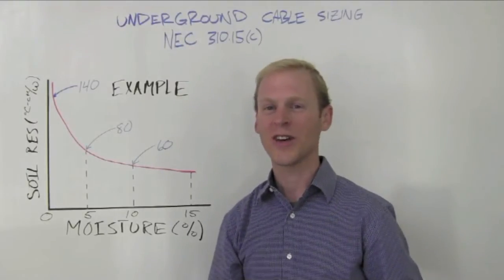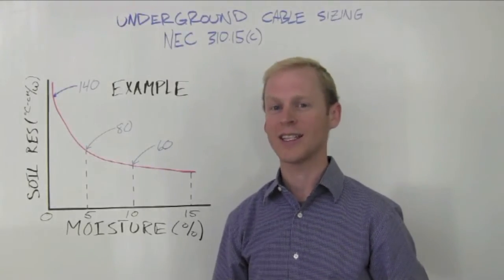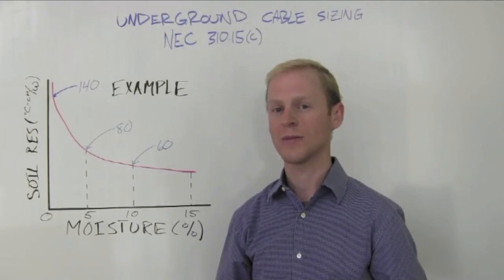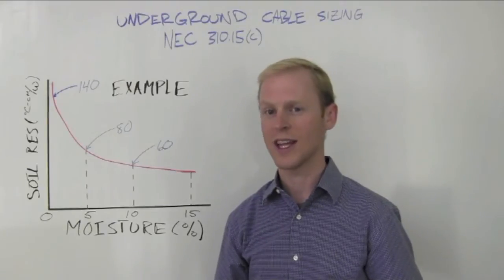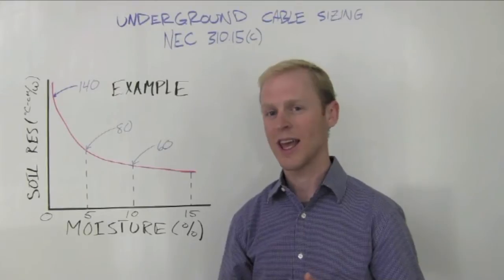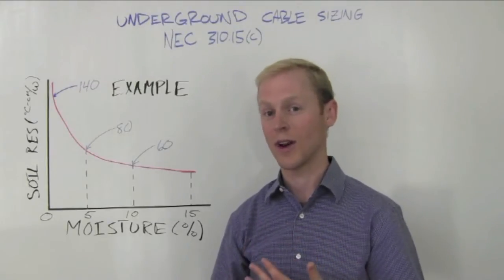The National Electric Code gives tables that give general guidance on how to size cables underground. However, they're very generic and use assumptions for things like soil resistivity, soil temperature, cable and conduit spacing, and the amount of load on cables.